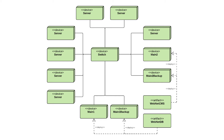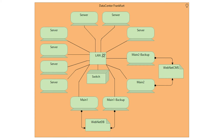If you take a look at the Archimate example, you could immediately spot a lot of similarities. This is because the Archimate technology layer was based on some UML elements. Node and Device have the same meaning as in UML. The new concept introduced in Archimate is called communication network, which depicts some kind of network organized with a set of structures and protocols.